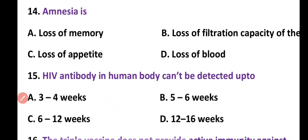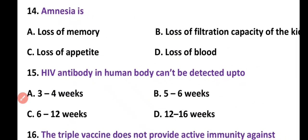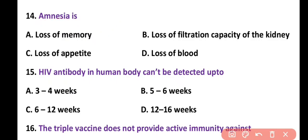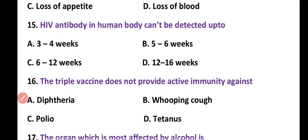Question 14. Amnesia is a condition of: loss of memory, loss of filtration capacity of kidney, loss of appetite, or loss of blood. Correct answer is option A. Amnesia is a condition of loss of memory.